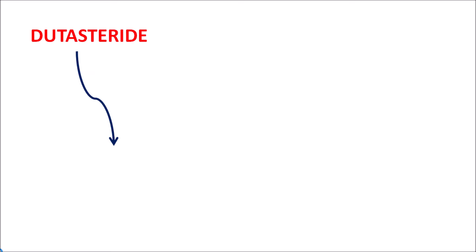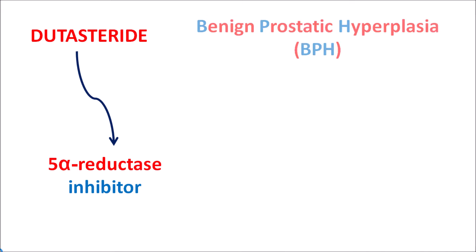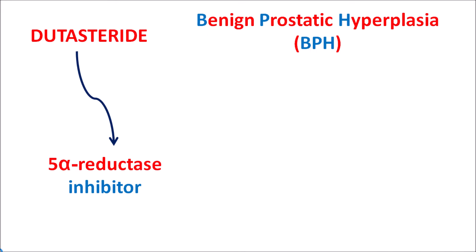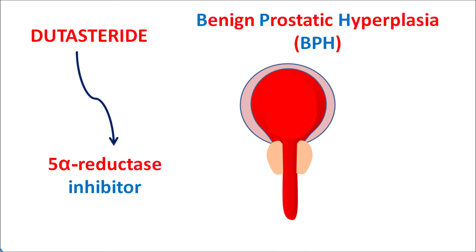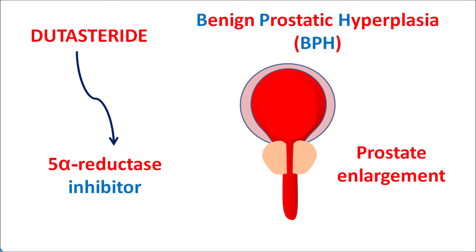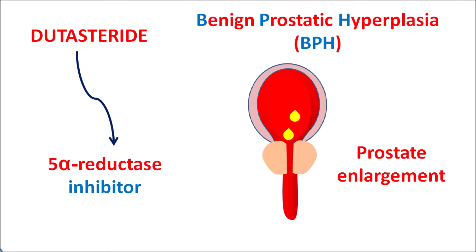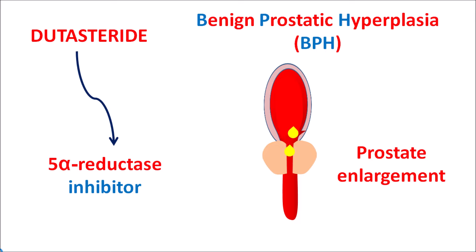Dutasteride is a 5-alpha reductase inhibitor which is indicated for the treatment of benign prostatic hyperplasia, or benign prostatic hypertrophy, commonly known as BPH. This is a condition observed in elderly men.